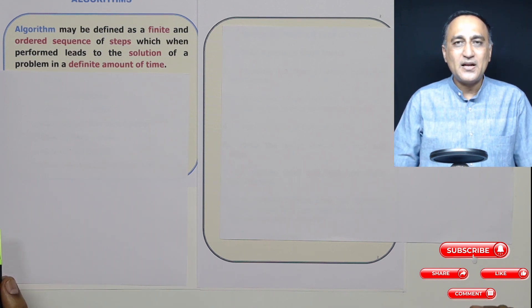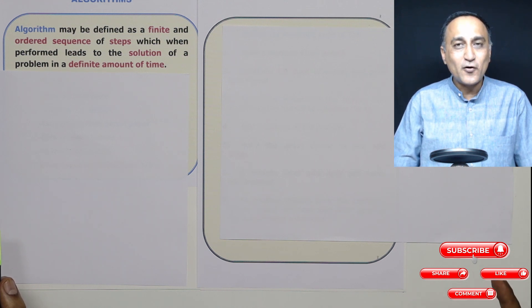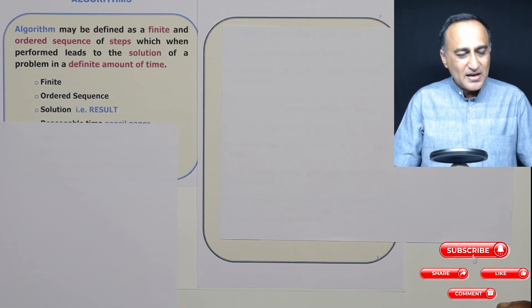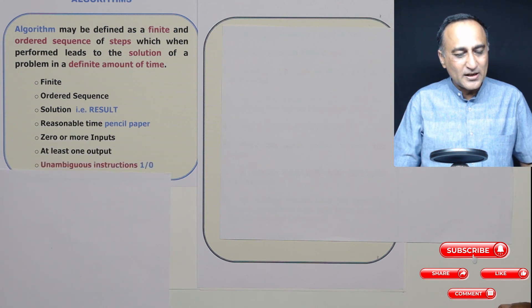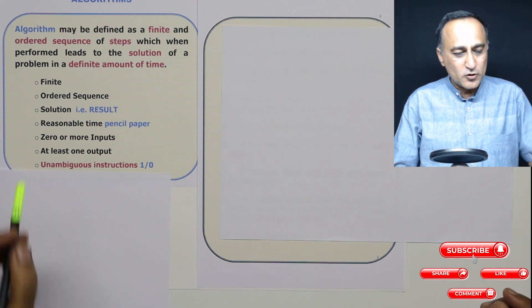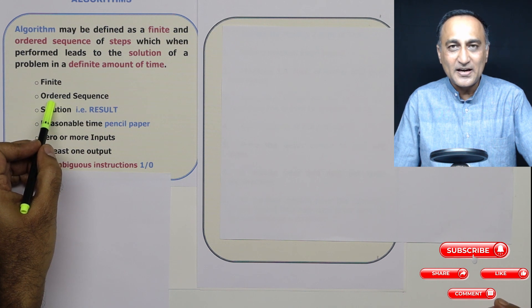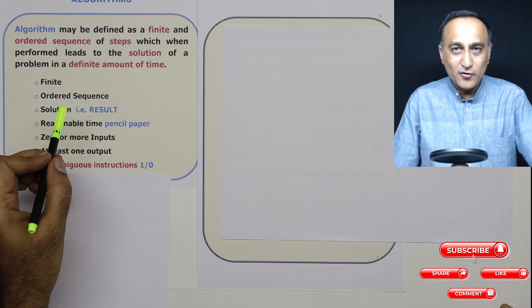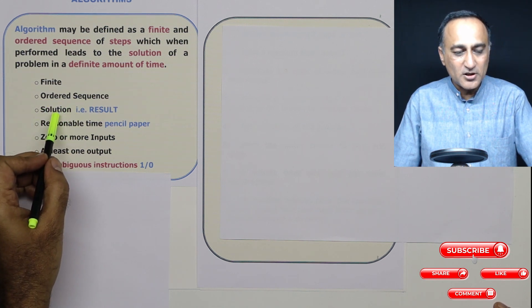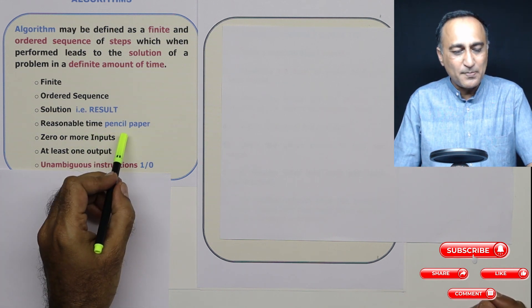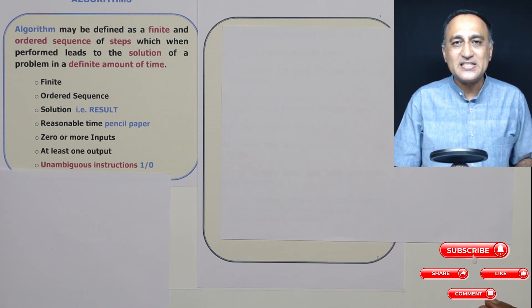The keywords for an algorithm are: it should have a finite number of steps; those steps should be in a particular sequence; if you follow that, it will lead to the solution of a problem; and most importantly, in a definite amount of time. So an algorithm is an approach to solve a problem having a finite number of steps, a definite and meaningful sequence, and it should lead to a result or solution in a reasonable amount of time.